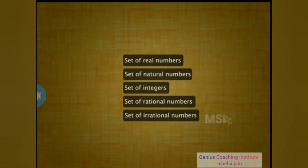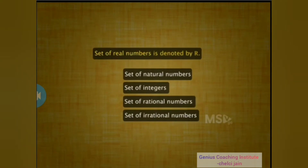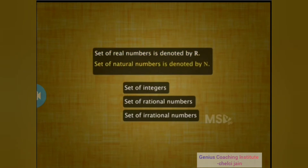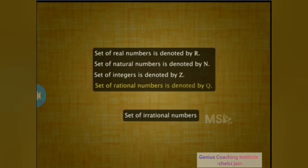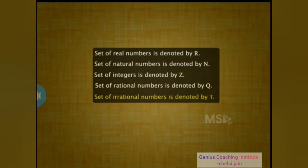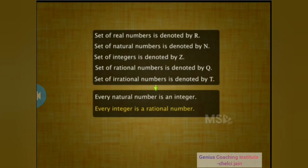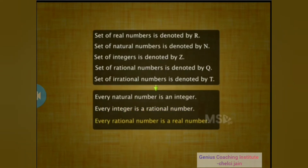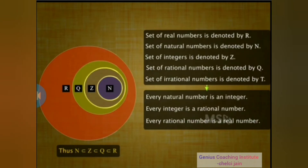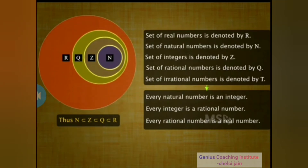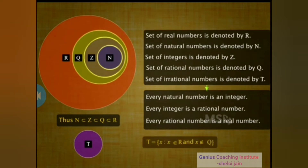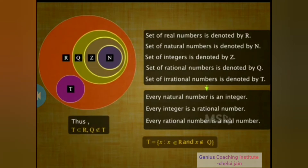We have known some subsets for a few years without knowing they are actually subsets. We denote the set of real numbers by R, the set of natural numbers by N, the set of integers by Z, the set of rational numbers by Q, and the set of irrational numbers by T. Every natural number is an integer, every integer is a rational number, and every rational number is a real number. Thus, N ⊆ Z ⊆ Q ⊆ R. The set T is composed of all real numbers other than the rational numbers, such as √2, π, etc. Thus, T is a subset of R but Q is not a subset of T.